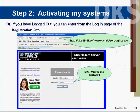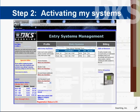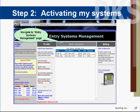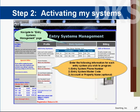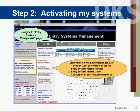Once you have set up your registration, you can log in to the registration site and begin activating your systems. To activate the system, navigate to the entry systems management page in the website. You will enter the entry system phone number and the master code for each entry system. You can also assign an account or property name — this is just for your reference purposes.